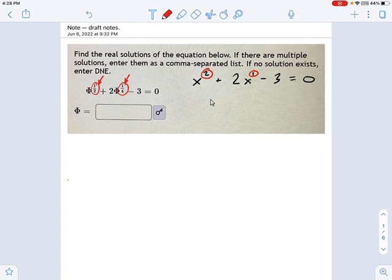This means we can use a special technique called u-substitution to just make our equation look like a quadratic equation, solve it, and then undo the change. So let's make that substitution.